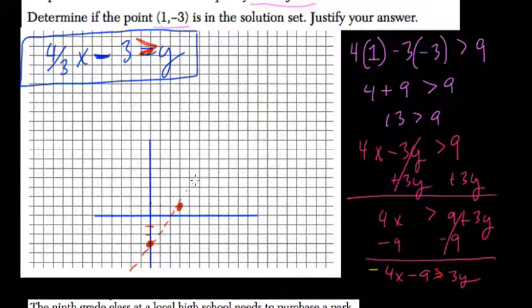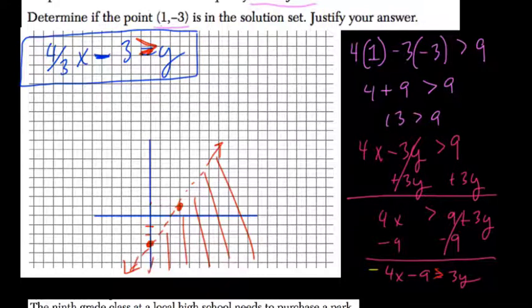So we dot our line here, right, as an approximation. You'll have a ruler. And we shade everything below it because y is less than it. And you can see that (1, -3) would be right here, which is in the solution set of the inequality. So just to reiterate, you can find out a point is in the inequality by plugging it in. You can also graph the inequality, shade the appropriate region, and see if the point actually goes there.